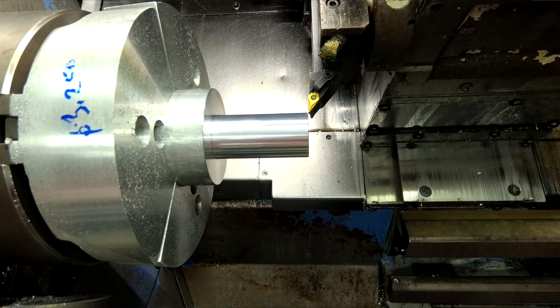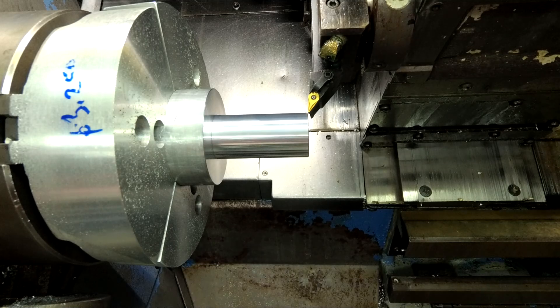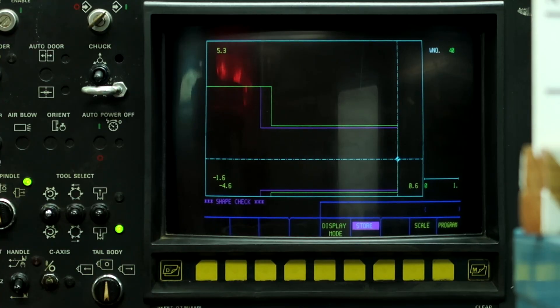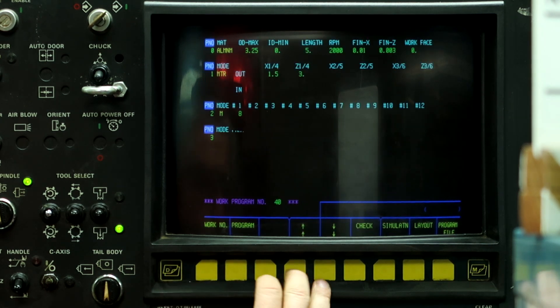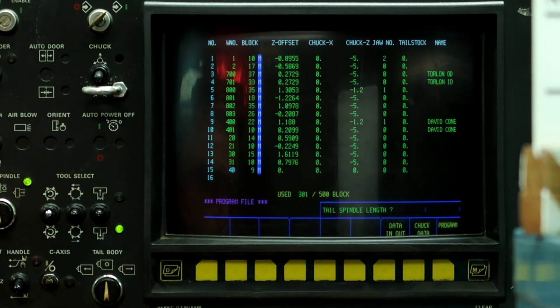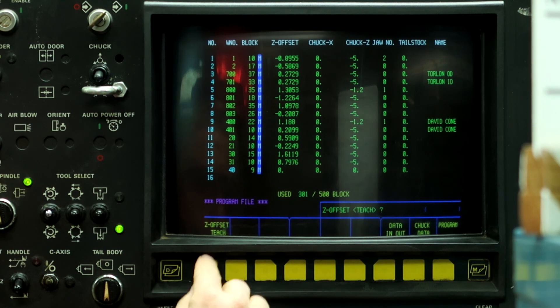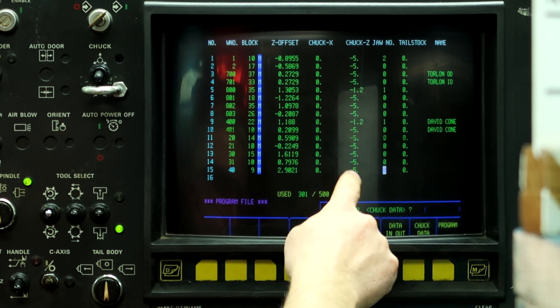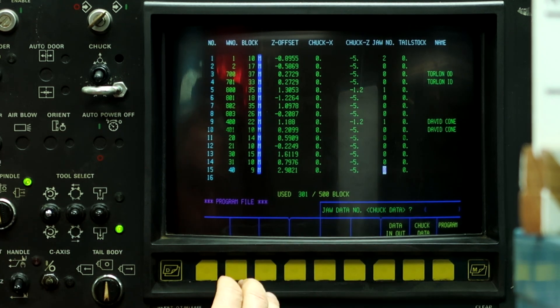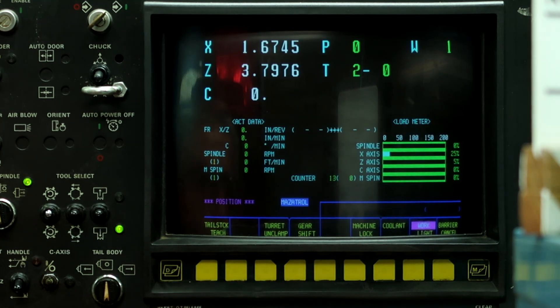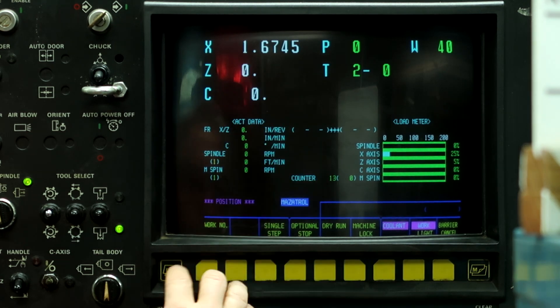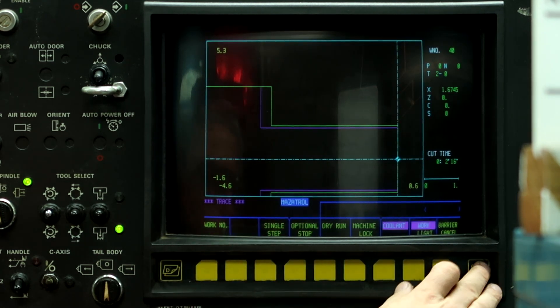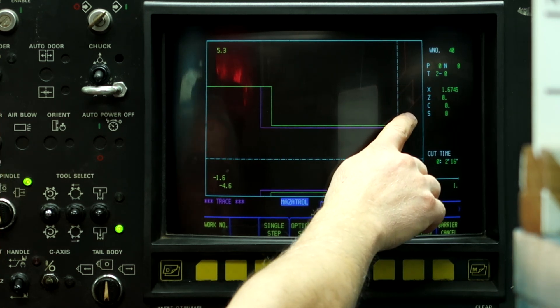All right, that's close enough for this part. Program, Program File, Z offset teach, zero input, minus five on the chuck Z to bring it out of the way. Auto, work number 40, now we're at zero. And then here's our tool over here on the front of the part.